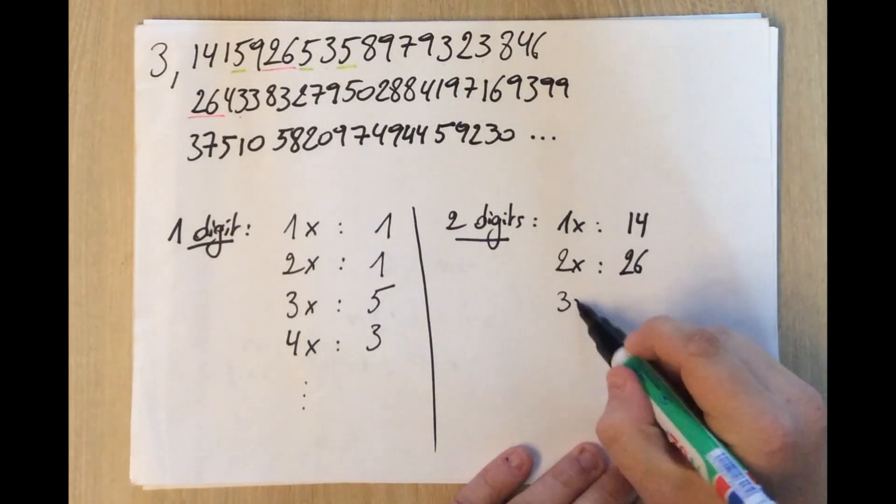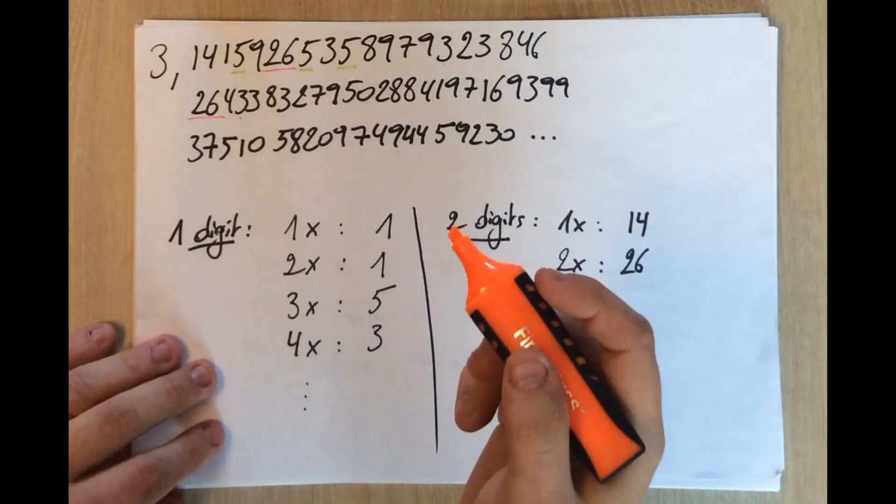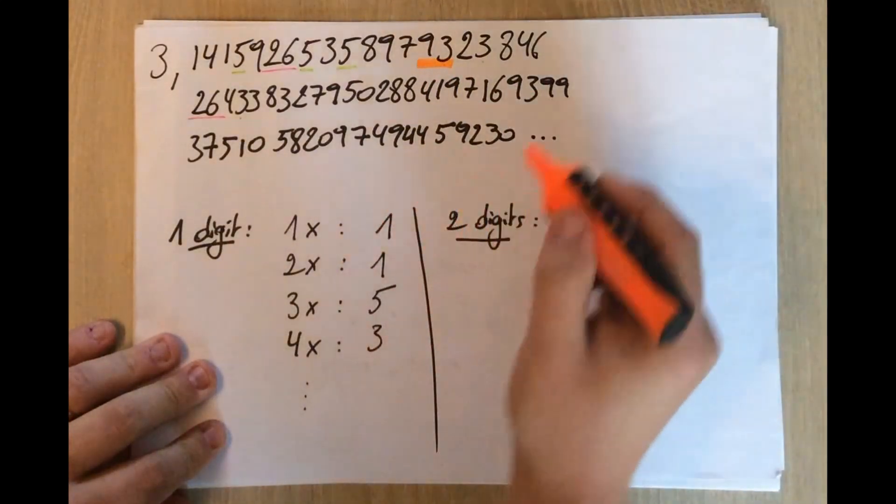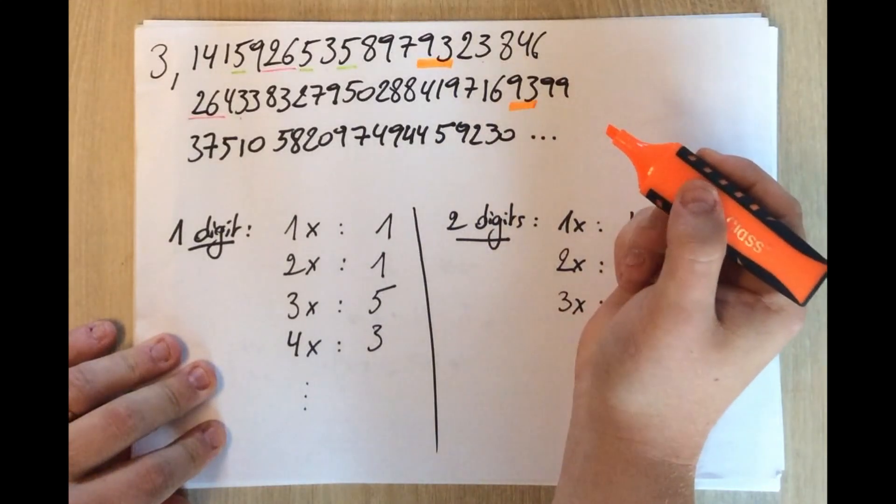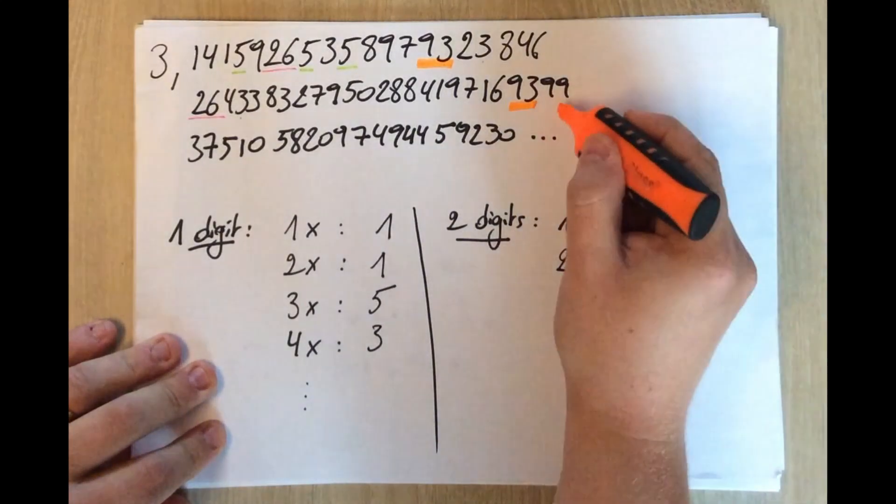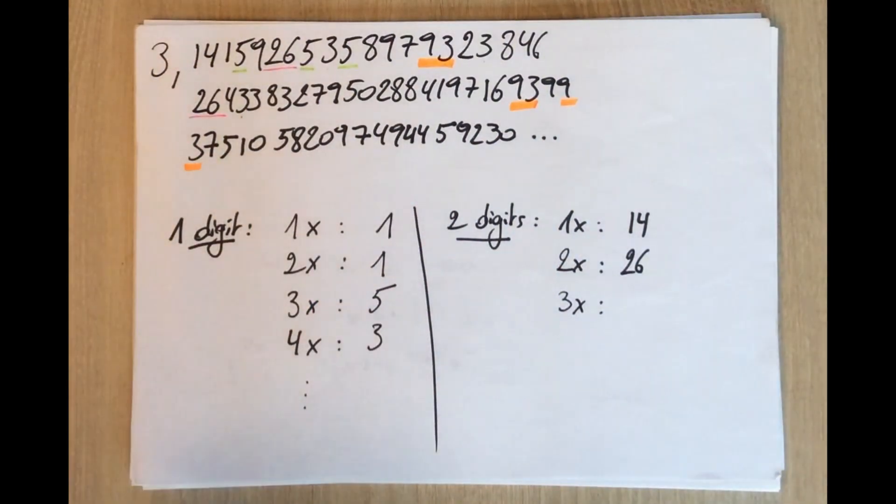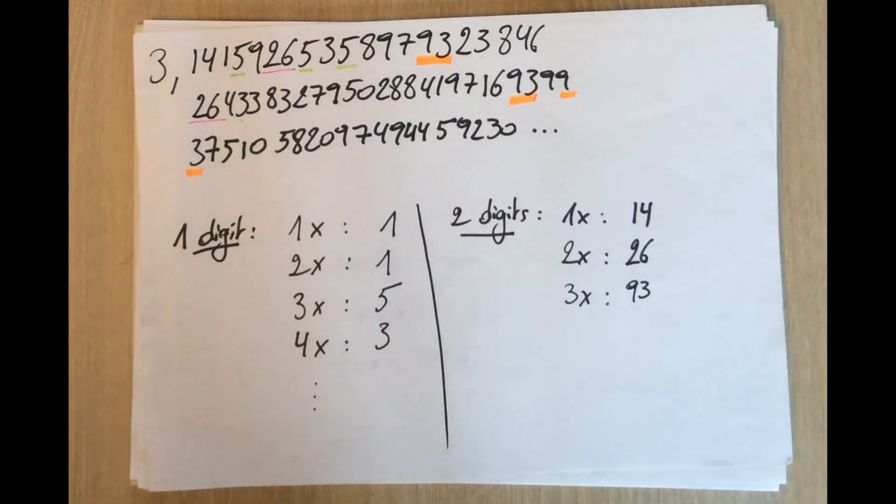And also, the first one to appear three times of two digits, we can find in this part of pi. Because, maybe in orange, we have the number 93 over here, we have the number 93 over here, and we have the number 93 over here, broken over the line. But still, it is there. And that's the first one appearing three times. The first two-digit number appearing three times.